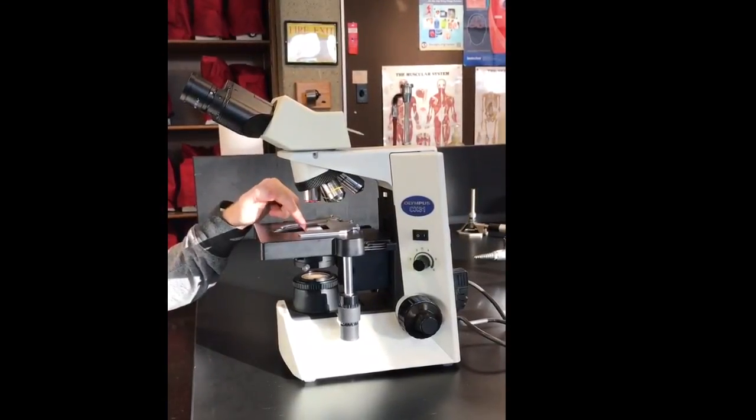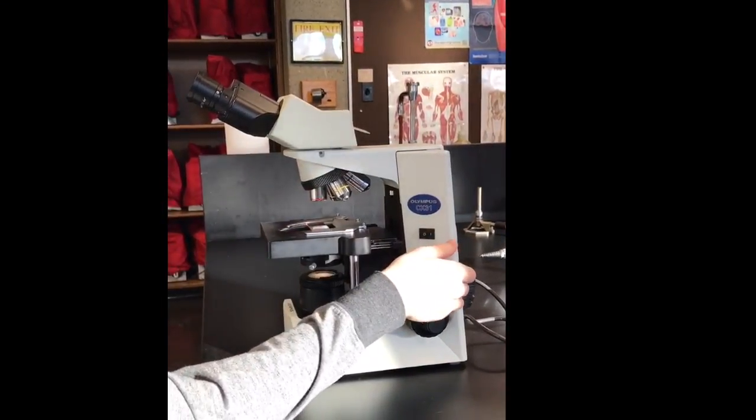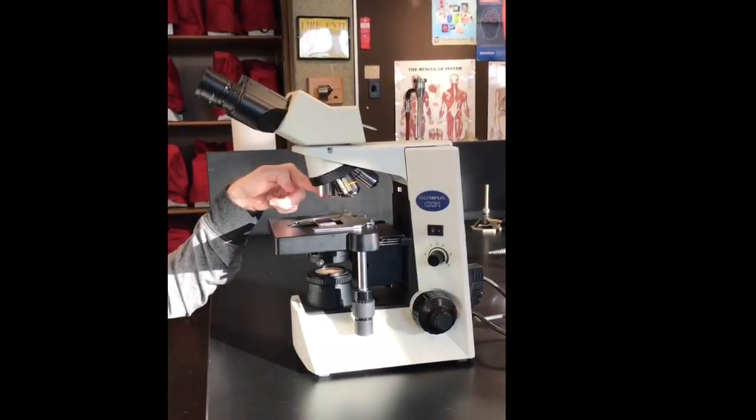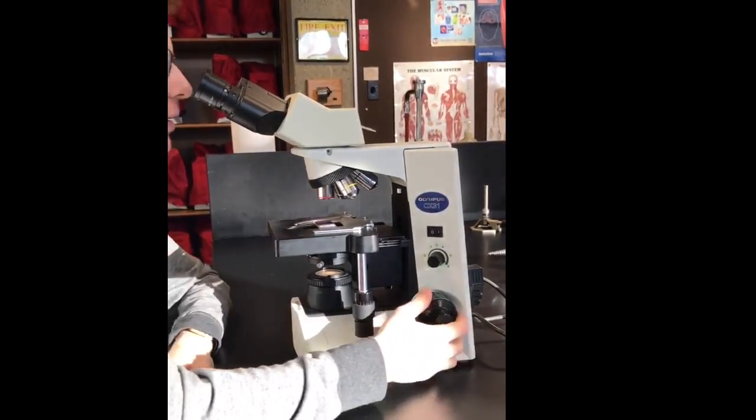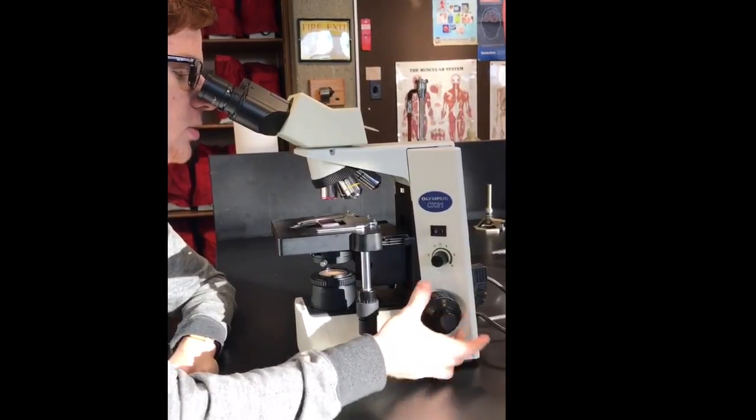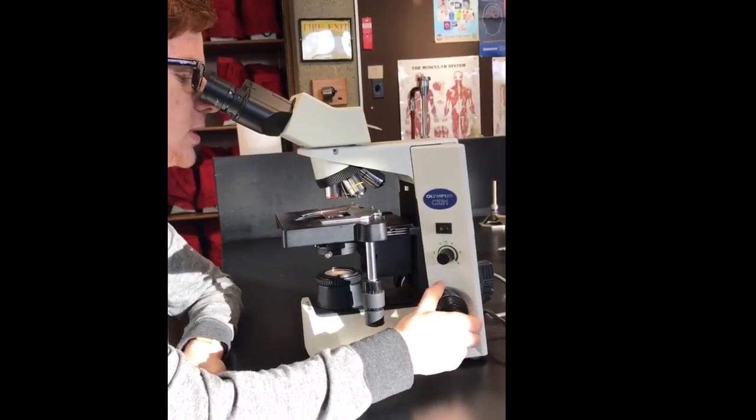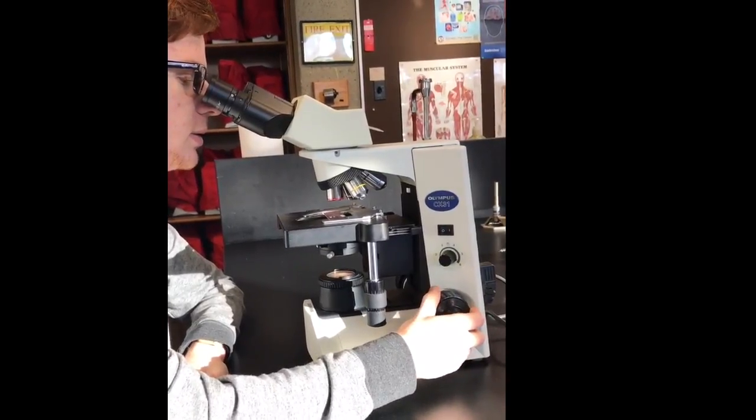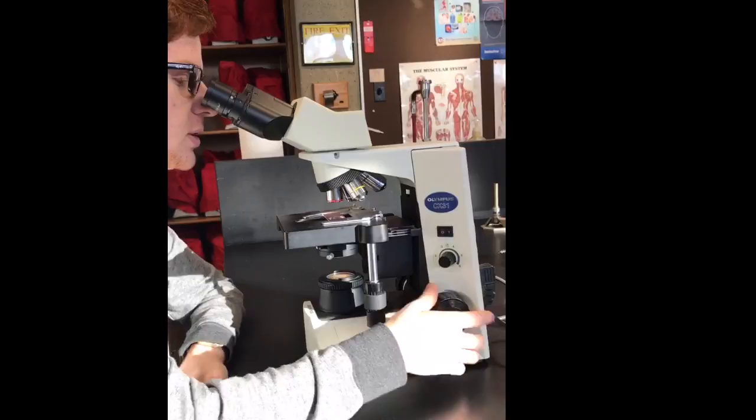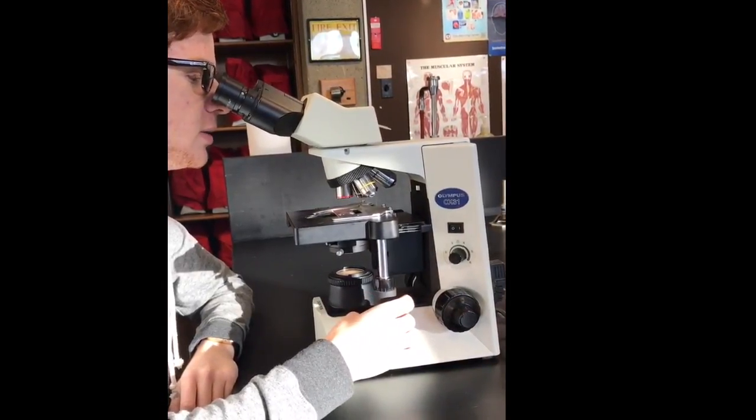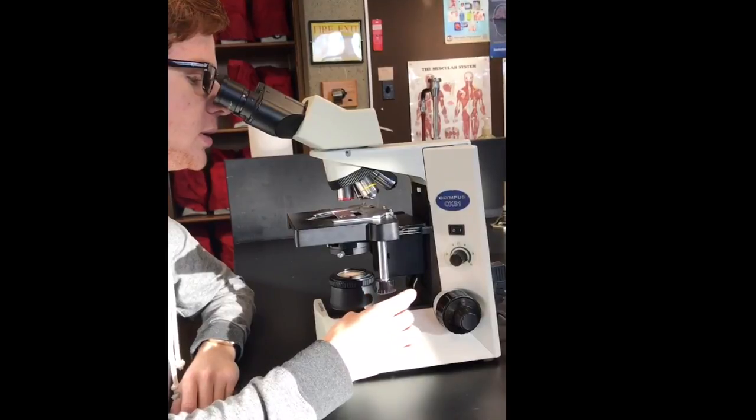Once you have your slide in place, your light adjusted, and your ocular lenses adjusted, we can start with the 4x lens, and we can look in the microscope and use the coarse adjustment knob, and just keep twisting it until you see your object. You can bring it somewhat into focus and then use the mechanical stage adjuster to find the main object that you're looking for.